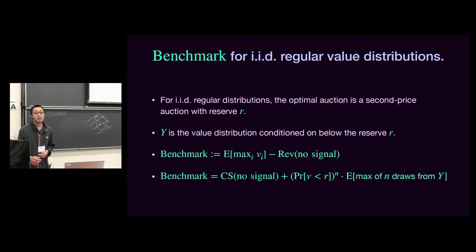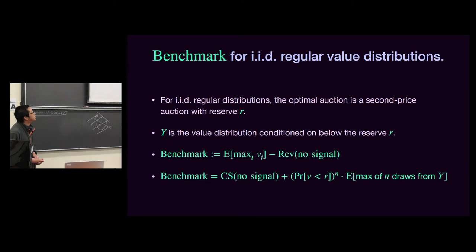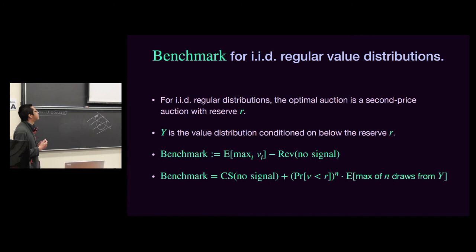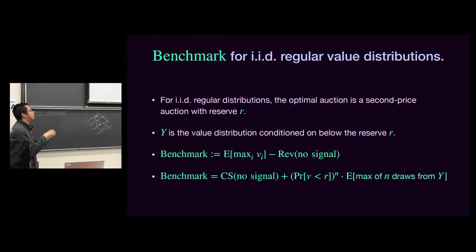From now on I'll discuss technical details. We first simplify the benchmark for IID regular value distributions. From Myerson's work, when value distributions are IID regular, the optimal auction is a second price auction with a reserve. Denoting Y as the value distribution conditioned on being above the reserve, the second price auction with reserve is generally quite efficient — the only inefficiency is when everyone's value is below the reserve. So the benchmark simplifies to the consumer surplus with no signaling plus the inefficiency term: the probability all values are below the reserve times the expected highest value among those.